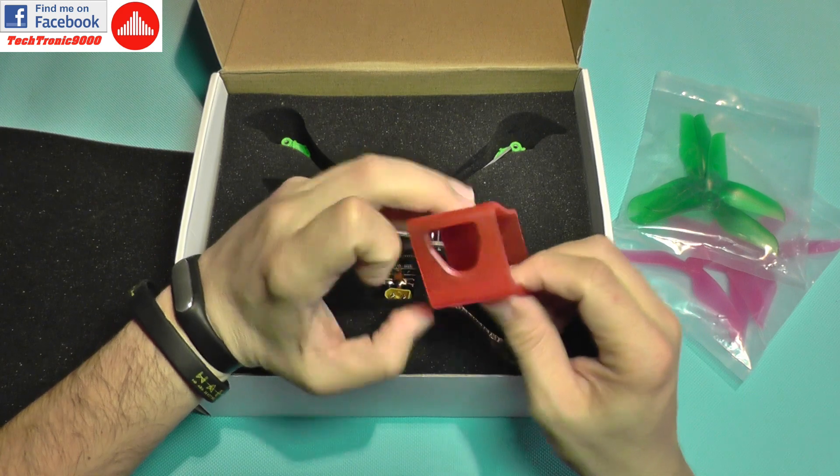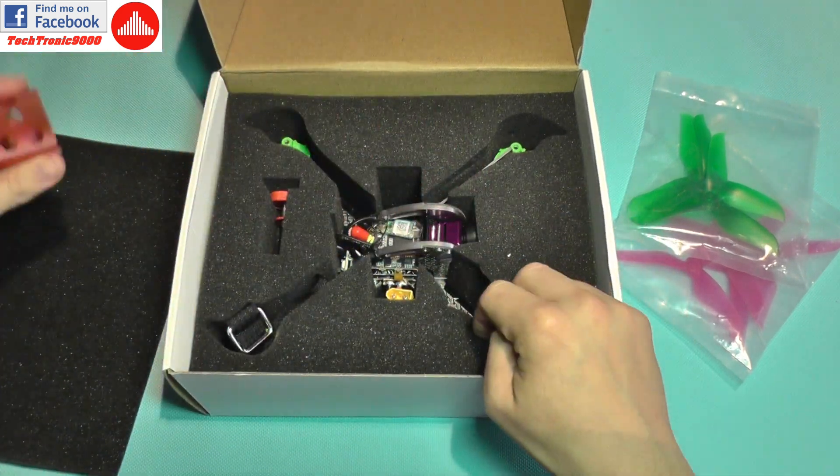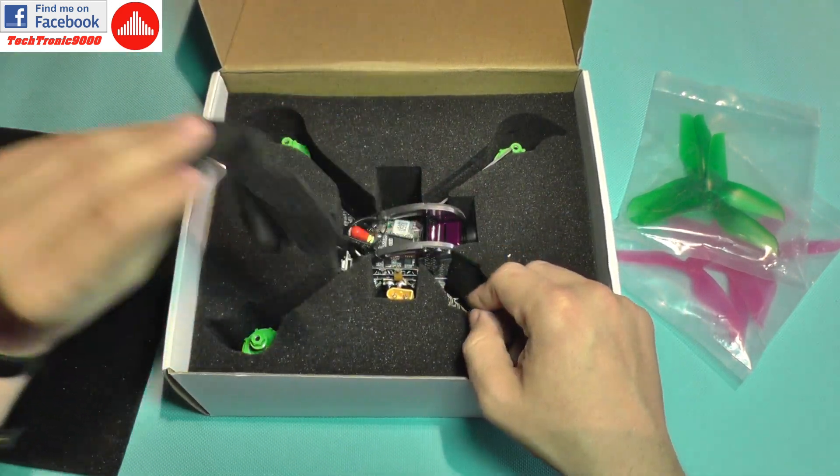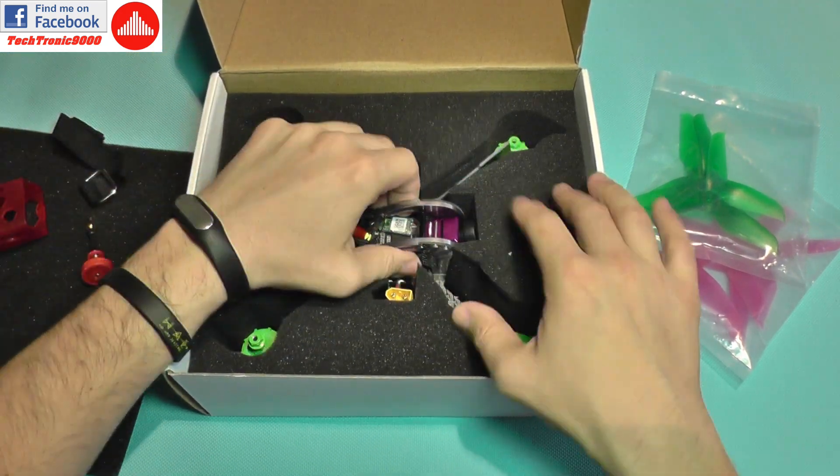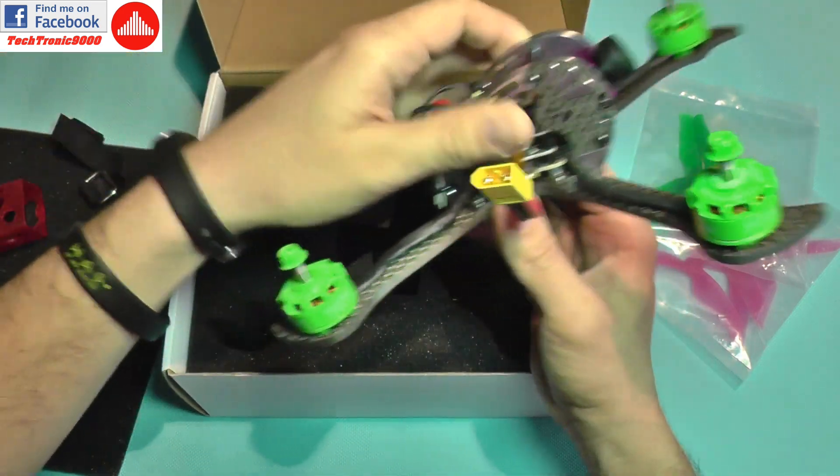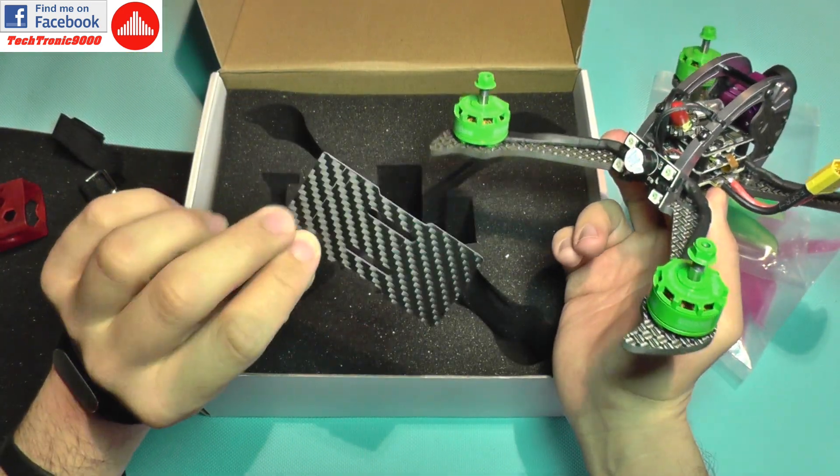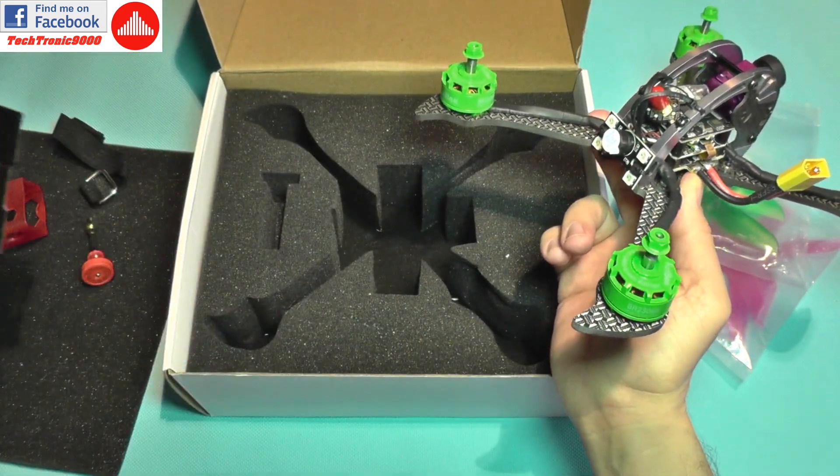This is the quad. It comes with this camera holder, it has the regular Verco pagoda antenna, and the quad itself comes with this plate which was not present in the normal version.